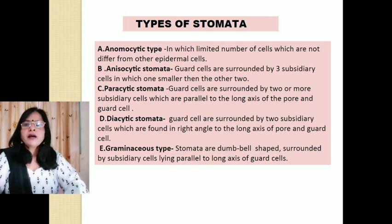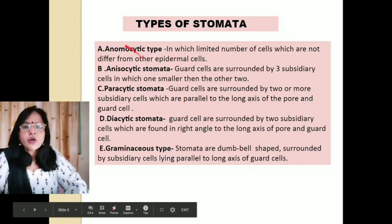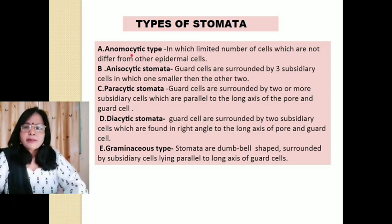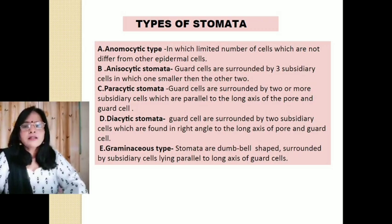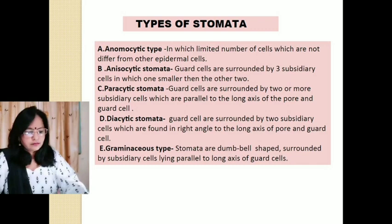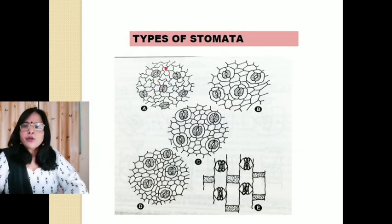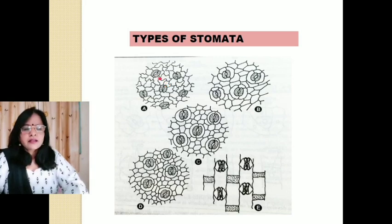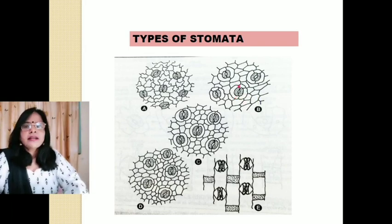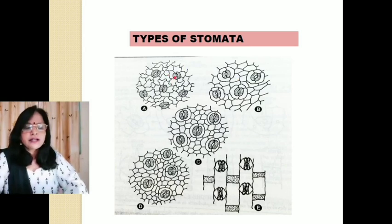Types of stomata — on the basis of association with subsidiary cells, stomata are of the following types. Number one is anomocytic stomata, in which a limited number of subsidiary cells are found that are not different from the other epidermal cells. Number two is anisocytic stomata, in which guard cells are surrounded by three subsidiary cells.